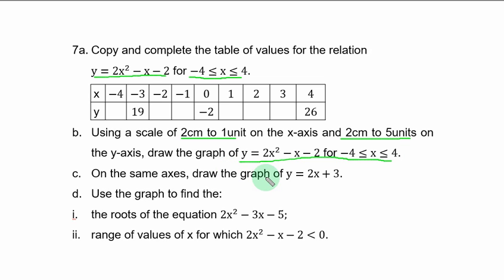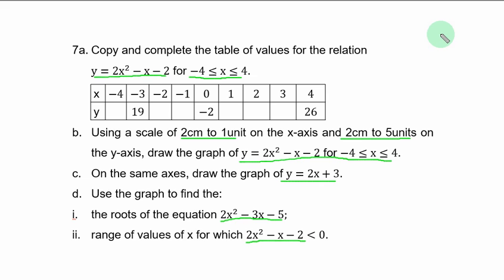On the same axis, draw the graph of y = 2s + 3. So you have a quadratic and a linear graph. Use the graph to find the roots of the equation 2s² - 3s - 5, and the range of values of s for which 2s² - s - 2 is less than 0.